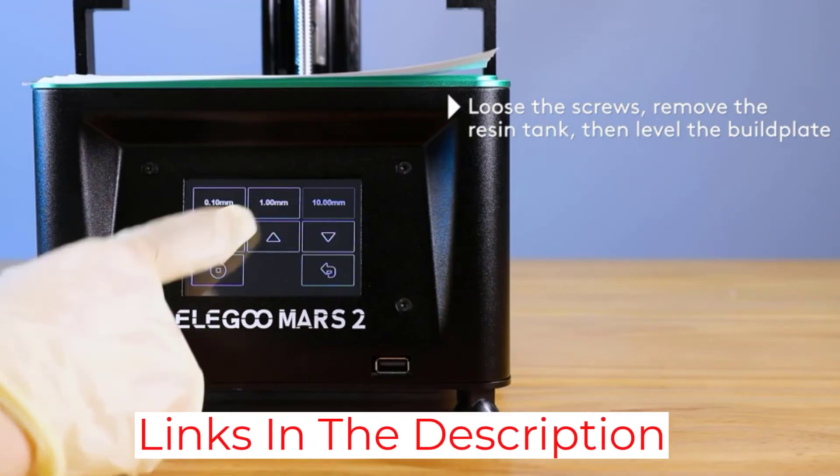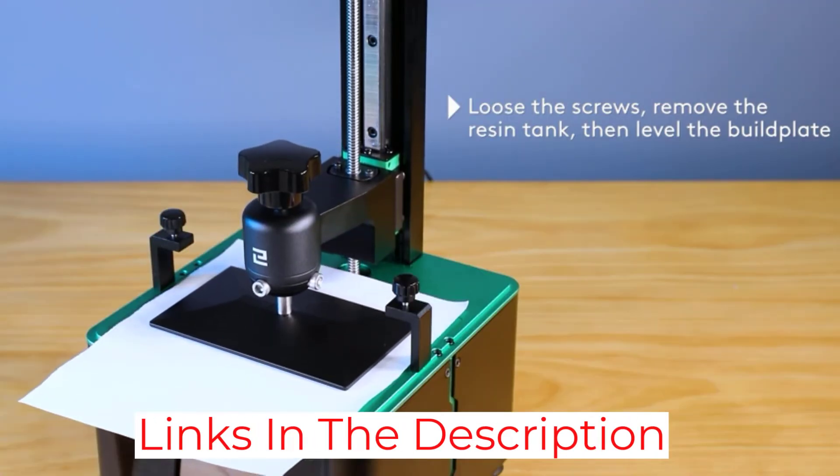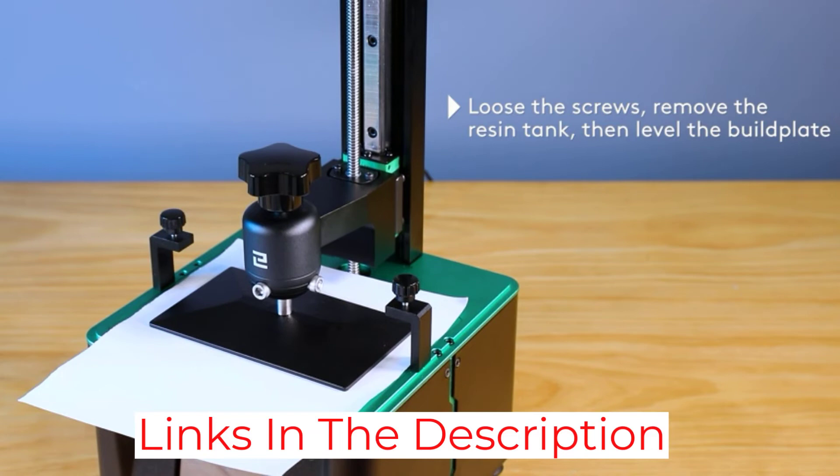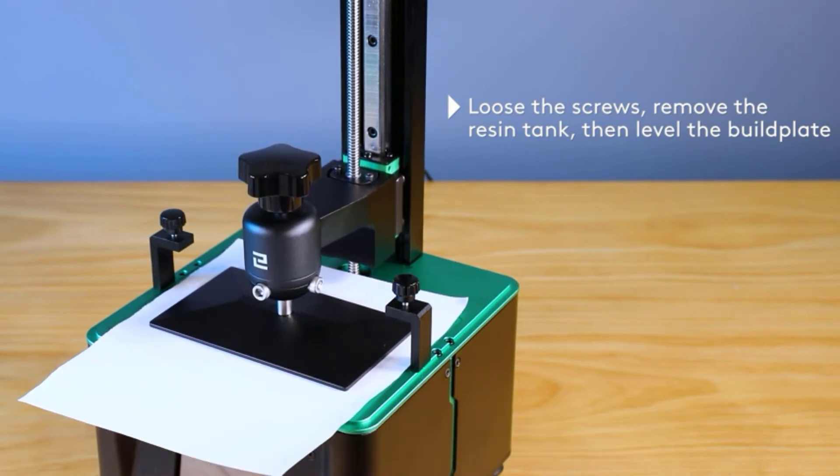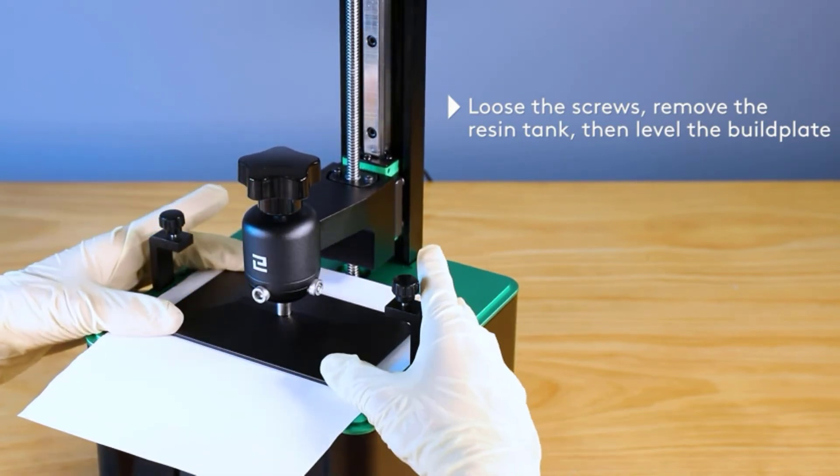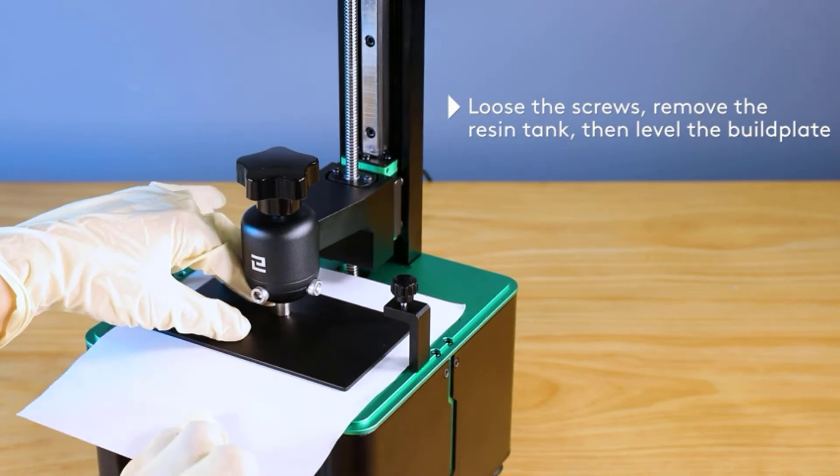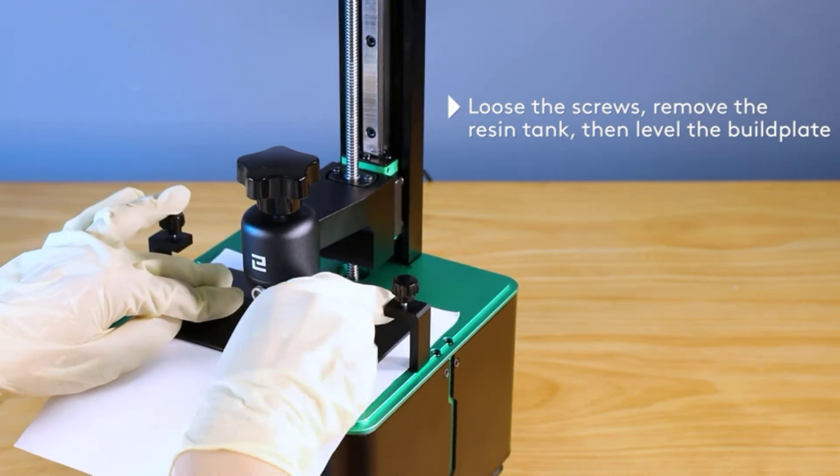The Elegoo Mars UV Photo Curing LCD printer is perfect for printing jewelry. It is available with all awesome features at an affordable price. So don't waste your time pondering. Go and get one for yourself.